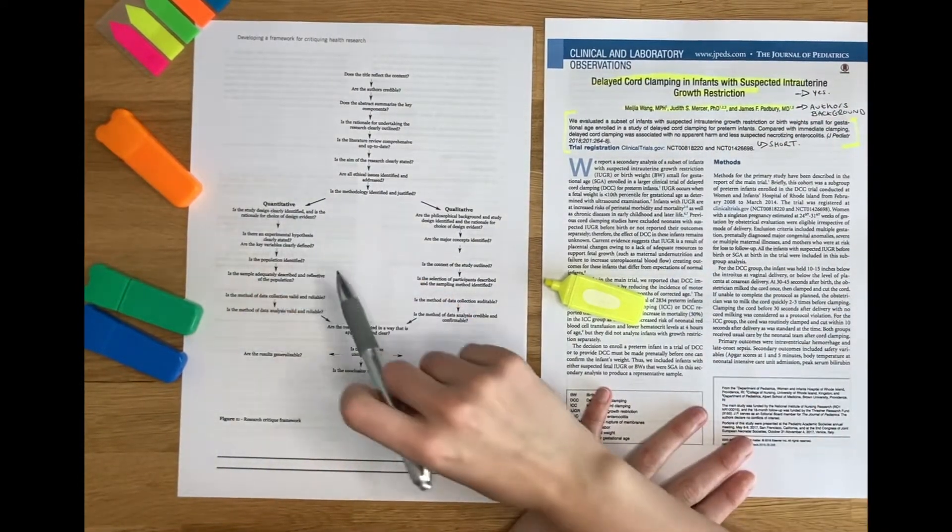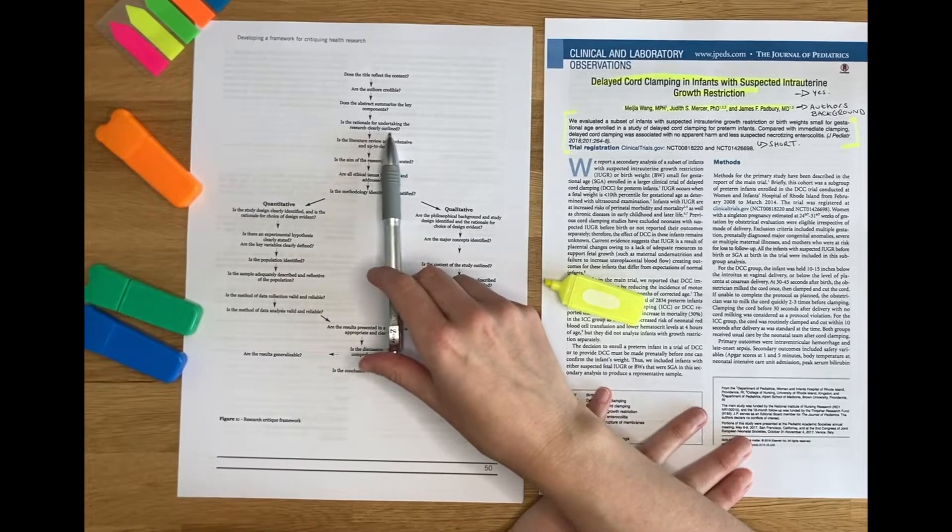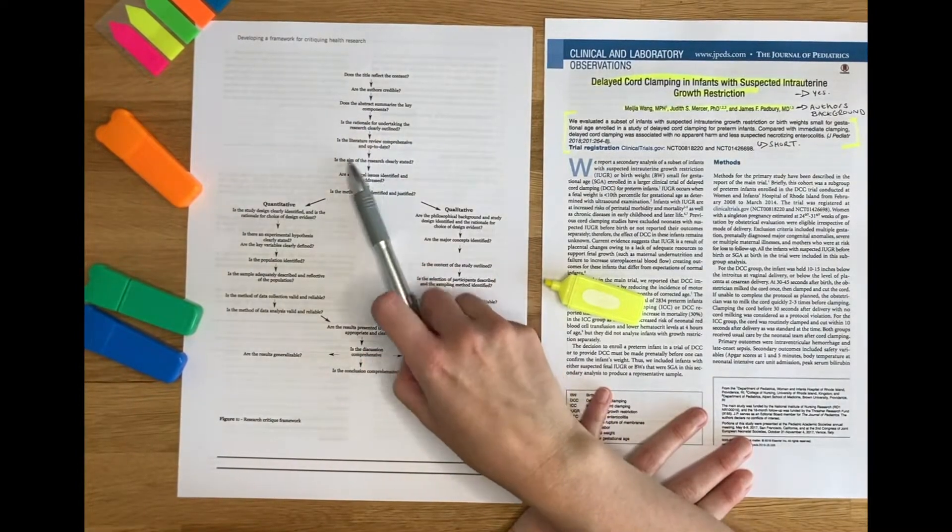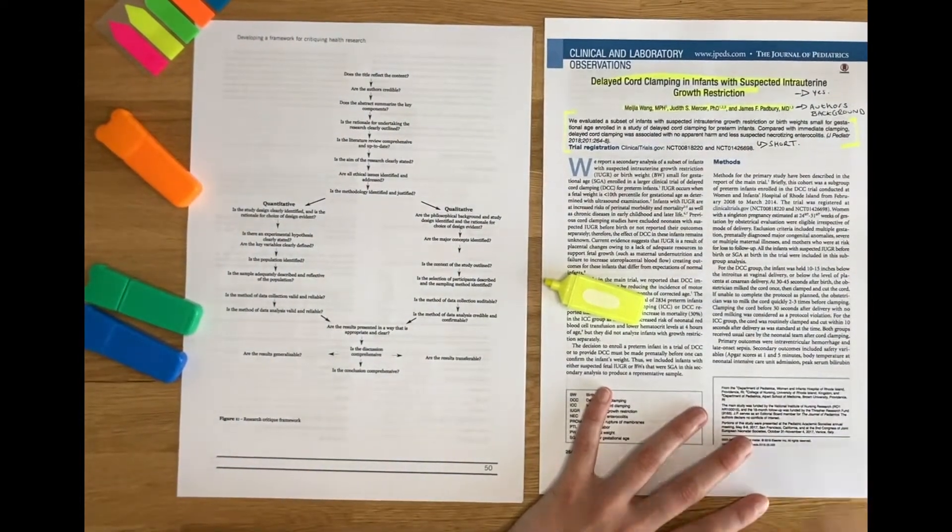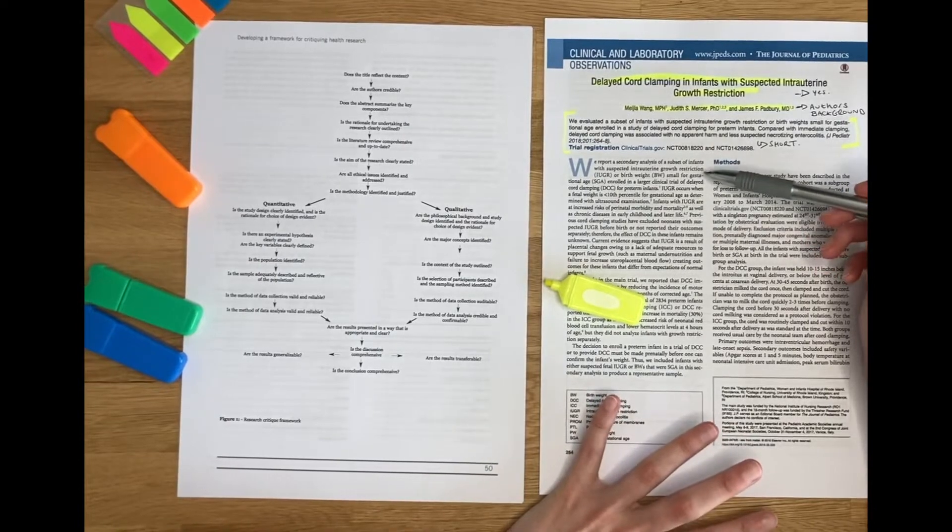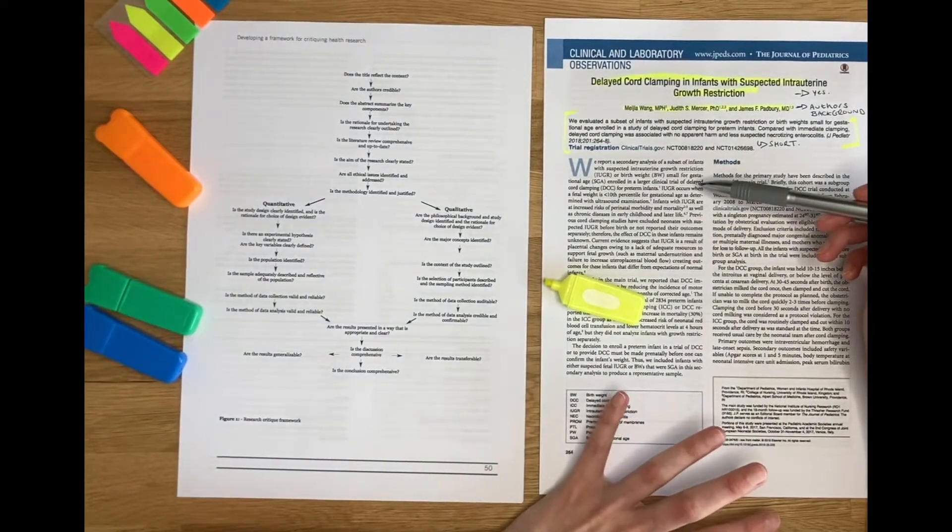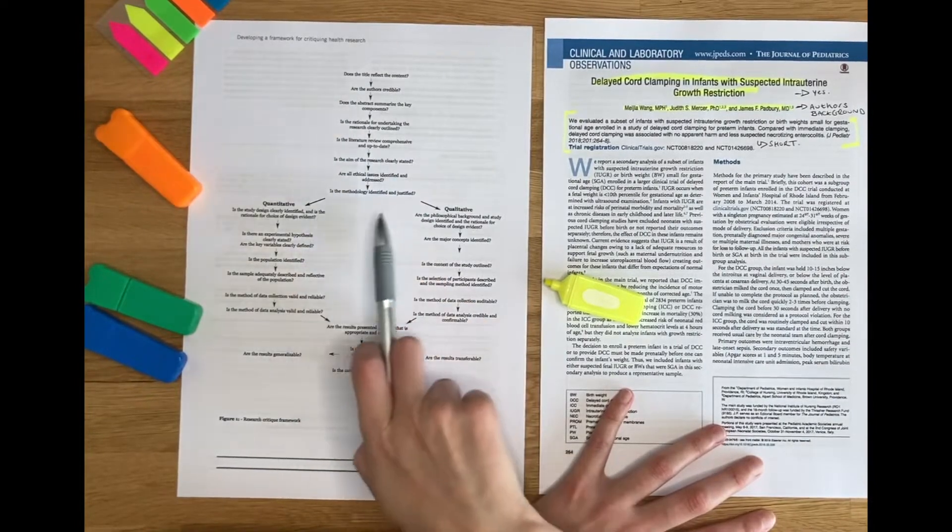So I can keep working my way down the framework. Now, the next question, for example, is the rationale for undertaking the research clearly outlined? For this, I'm going to need to read the first part of the paper. And you'll know by now that this initial part of the paper can be called the background, it can be called the introduction, it can be called the literature review. But it's generally where you're going to find the first part of Caldwell's framework.